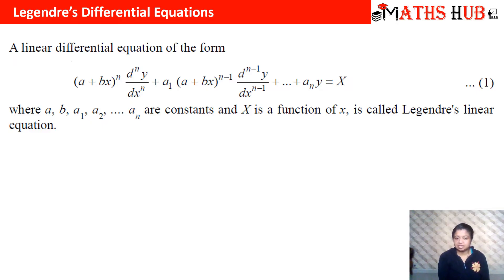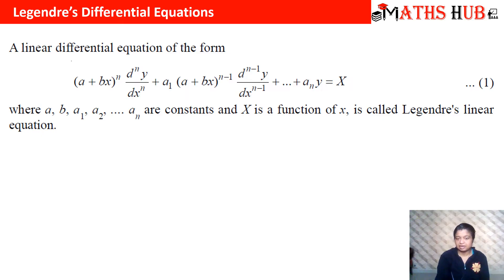Now in Legendre's equation we have a linear term, that is (a + bx), multiplied along with the differential coefficients. So when the differential coefficient is dy/dx, we have (a + bx) multiplied with it. If it is the (n−1)th order derivative we have (a + bx)^(n−1), and if it is the nth order derivative we have (a + bx)^n. The strategy of solving Legendre's differential equation is quite similar to what we did in Cauchy-Euler.